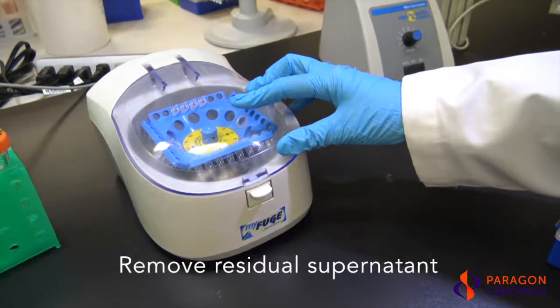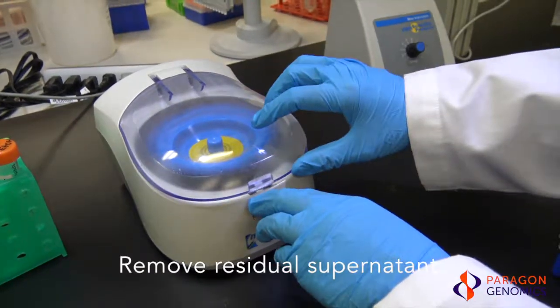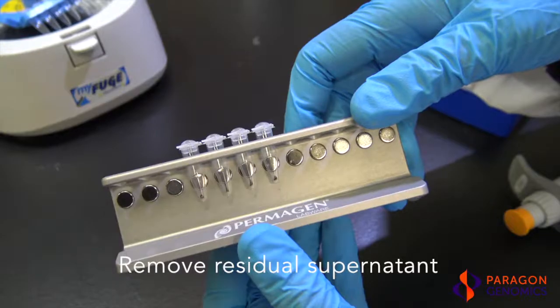Briefly spin down the tubes to collect any residual supernatant and then place the tubes back onto the magnetic rack. Carefully remove the remaining droplets of supernatant using a 10 µL pipette tip.